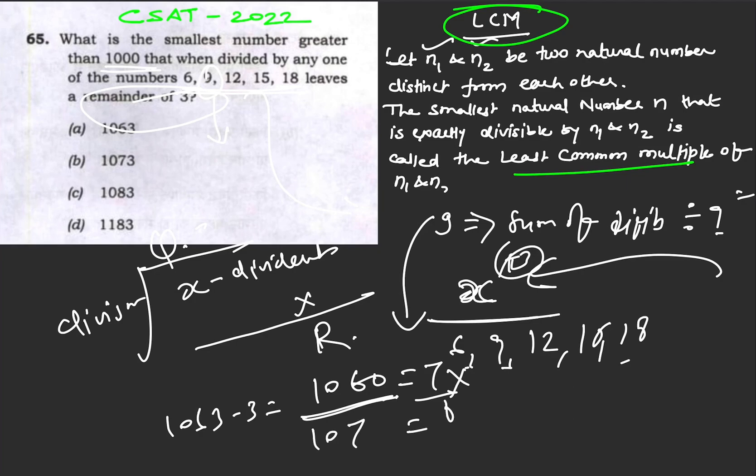1073 is not divisible by 9. Then we have 1083 minus 3 = 1080. Sum: 1+0+8+0 = 9, which is divisible by 9.